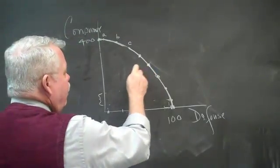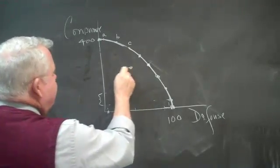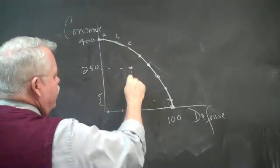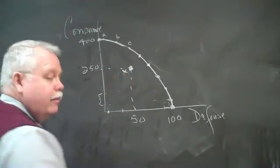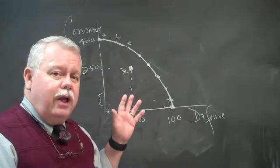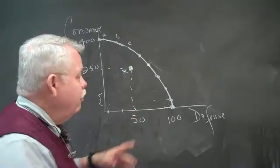However, what if you're stuck over here? Let's say that right here you're operating with 250 units of consumer goods and 50 units of defense. You're operating right here. We'll call that point X. Is that the best you can do? And the answer is no. You're not being efficient in the use of your resources.